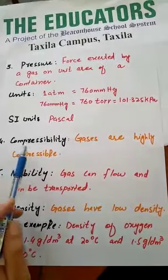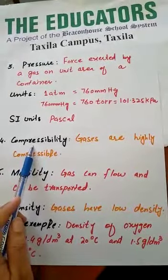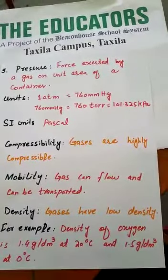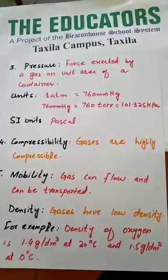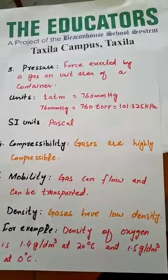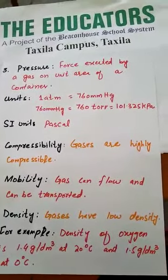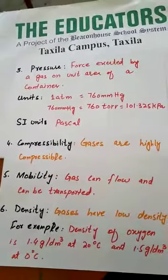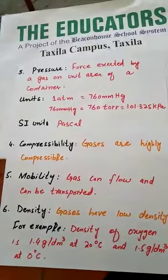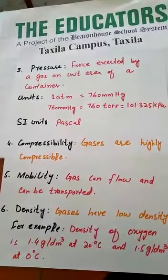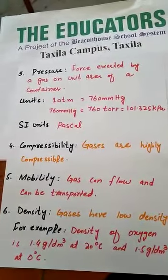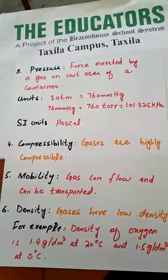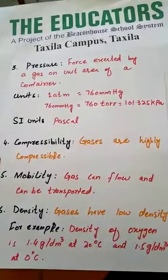The fourth property is compressibility. Gases are highly compressible. Why are gases highly compressible? This is due to the presence of large empty spaces between the gas molecules. When we apply pressure, the distance between the gas molecules decreases. Therefore, its volume decreases.